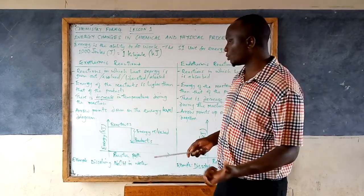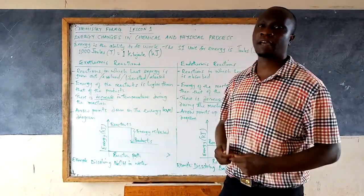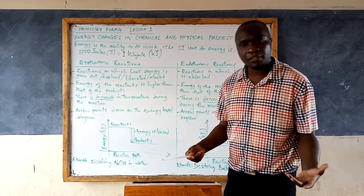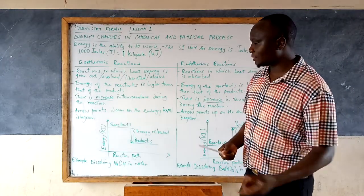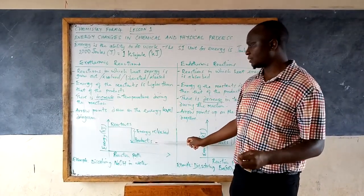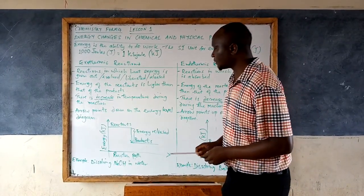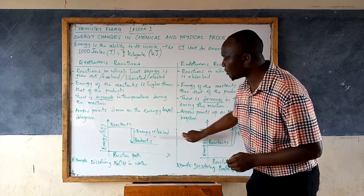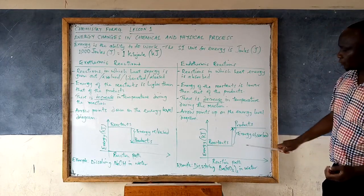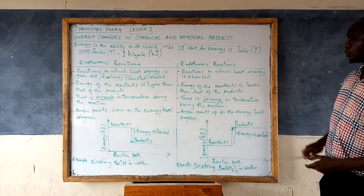Unlike the exothermic reaction where the products have less energy, because during the formation of the products, some heat energy was lost to the environment — it was given out, lost to the environment or absorbed by the apparatus. In an exothermic energy level diagram, the gap between the reactants and the products represents the amount of heat that was released. For the endothermic reaction as well, the gap represents the amount of heat energy that was absorbed during the reaction.